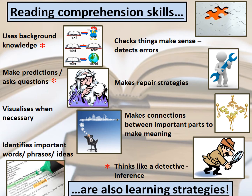To aid students' reading, we teach explicit reading comprehension skills in Year 7 and refer to these throughout all reading and writing units. Students are taught to use background knowledge to decipher a text, make predictions and ask questions, visualise when necessary — for example, in a descriptive piece of writing they might draw what they can see. They also focus on identifying important words, phrases or ideas, checking that things make sense and detecting errors, using repair strategies to correct these, making connections between important parts of the text, and thinking like a detective by making inferences. These skills are essential to all subjects and all exams.